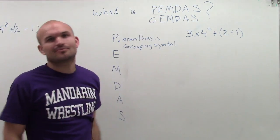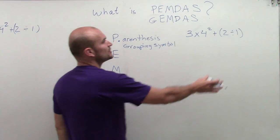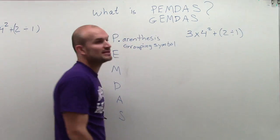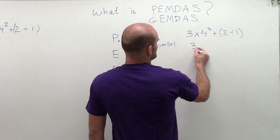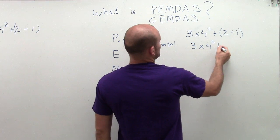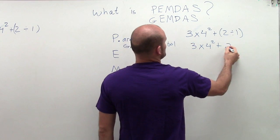But parentheses, right? Really. So the first thing you always want to do is your parentheses. So inside my parentheses here, I have 2 divided by 1. So that's going to obviously give me 2 divided by 1 is just 2.